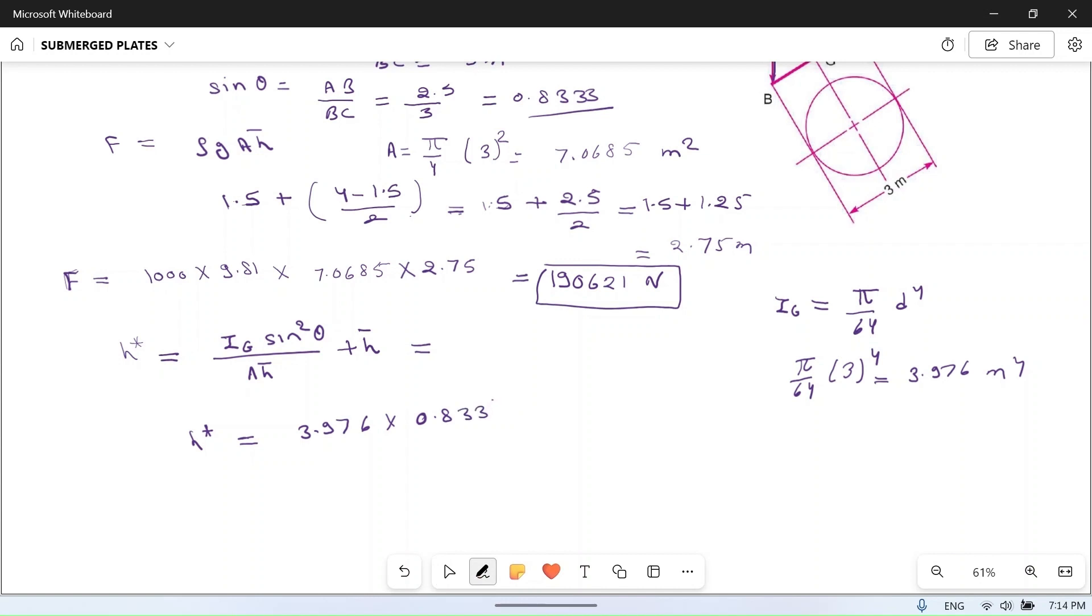Divided by area, area of the circle 7.0685, into h bar, h bar we have calculated 2.75.